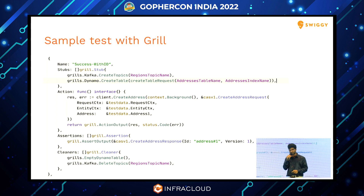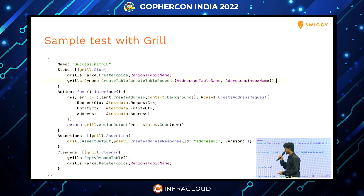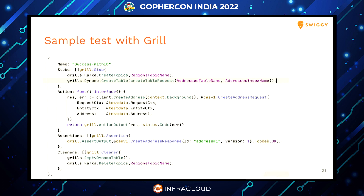That same test case, rewritten with GRILL, looks like this. It's a table-driven test very similar to any other unit test in Golang. It has all four methods we discussed: stubs, action, assertion, and cleaners. In the stubs, we call Kafka.createTopics and Dynamo.createTable, creating the necessary topics and table for the service. Then we perform an action — calling the gRPC createAddress endpoint with the required request. In the assertion block, we check if we got a successful response from the API. Finally, in the cleaner, we empty the DynamoDB table and clear up the Kafka topics.